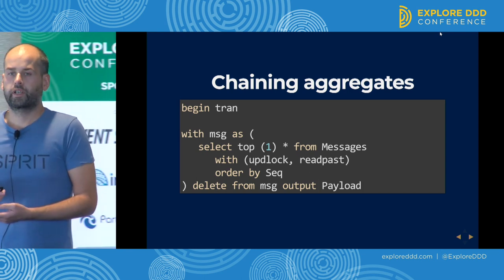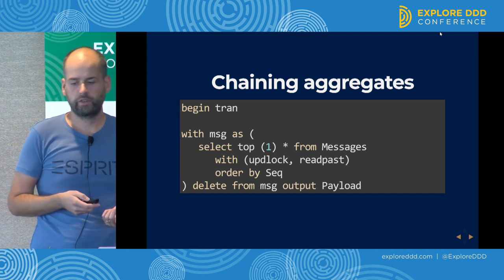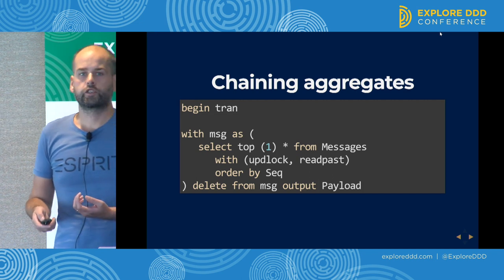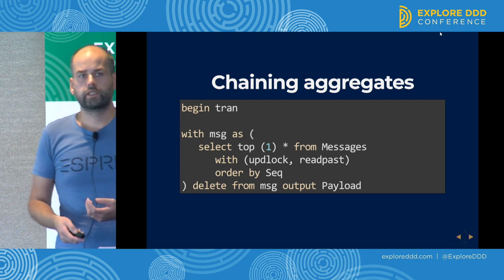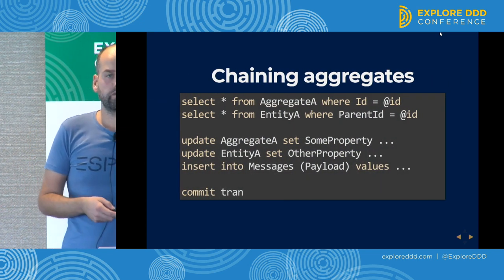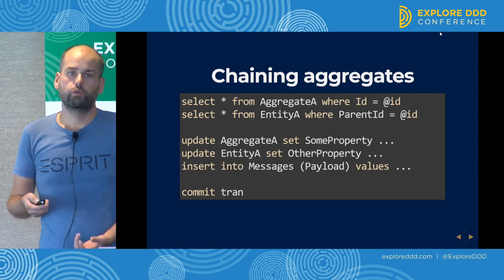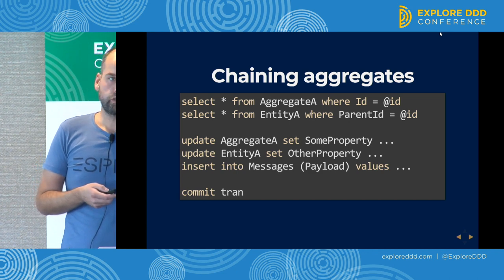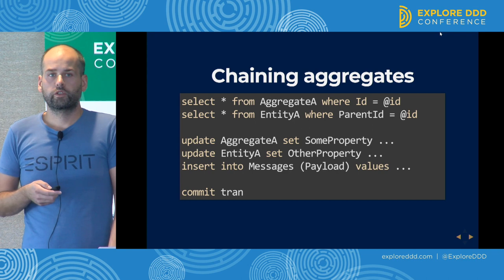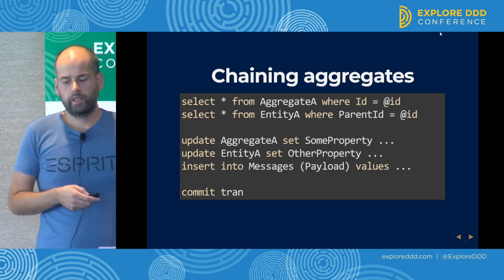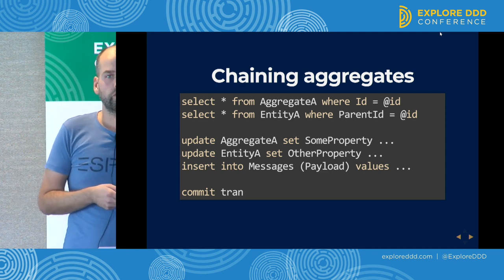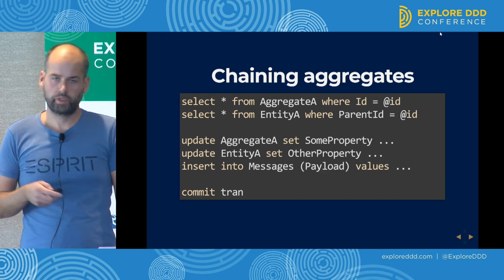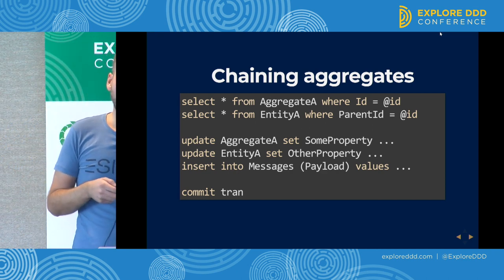In SQL, it can be represented as a transaction that looks like this. We begin a transaction with SQL Server, or Oracle, or any relational database. We do a destructive select, which takes one row from the database and locks it so no other thread can delete that row at the same time. We now have all the information required to process the message. Then we load aggregate information using an object-relational mapper, execute the business logic contained in the domain model, then execute updates or inserts to create or update information in the database. And last but not least, we send messages because we want to inform other aggregates that they need to do some sort of work.